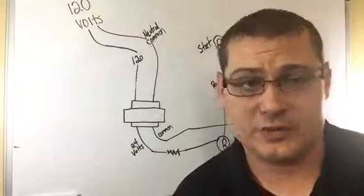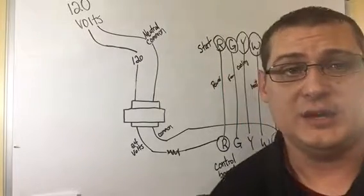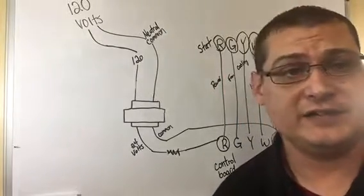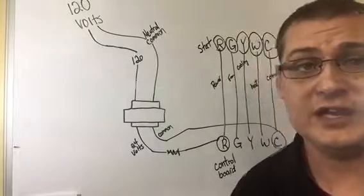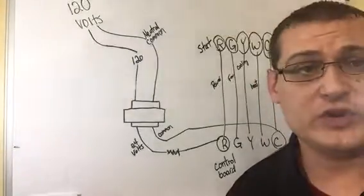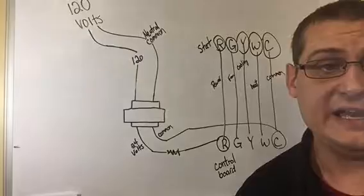R is your power, your 24 volts. G is your fan. That's the switch for the fan. Y is for cooling. W is for heat. And C is common.